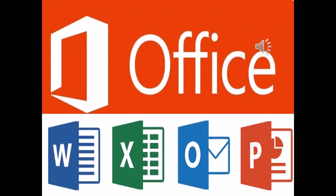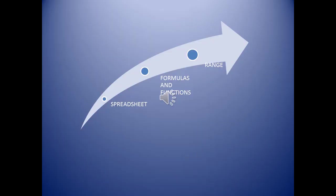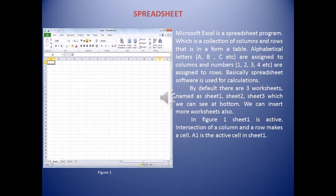We are going to start with Excel today. As you can see in this figure, three topics are given: spreadsheet, formulas and functions, and range. You have studied Excel in seventh class also, so here I am just briefing you again. When you open Excel, a grid will be seen on the screen — it is in the form of a table which consists of columns and rows.